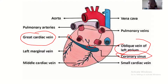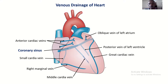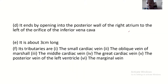The coronary sinus is a wide venous channel that runs from left to right in the posterior part of the atrioventricular groove. You can see the coronary sinus here — it begins at the angle of the great cardiac vein, and the oblique vein of Marshall feeds into the coronary sinus posteriorly near the left atrium. It ends by opening into the posterior wall of the right atrium, to the left of the orifice of the inferior vena cava.